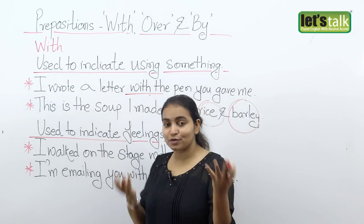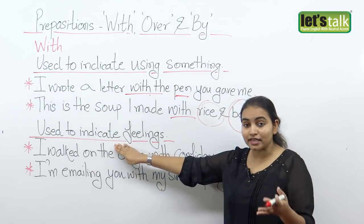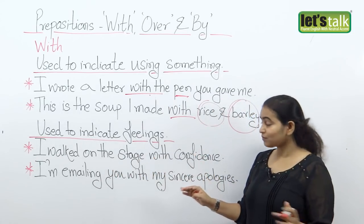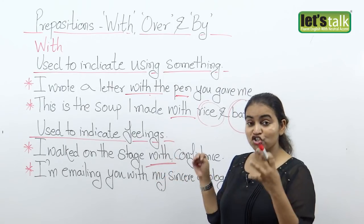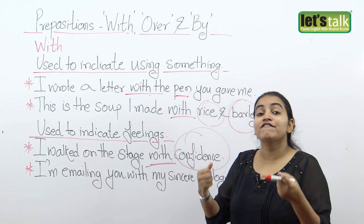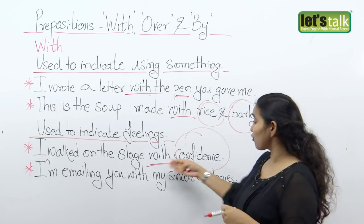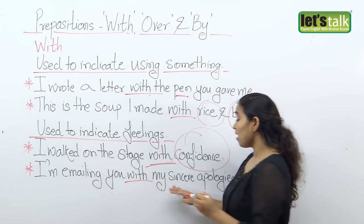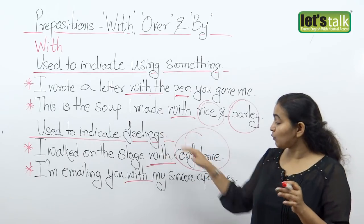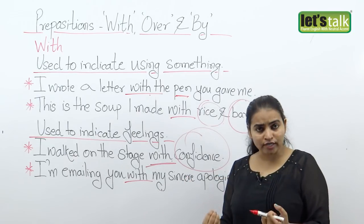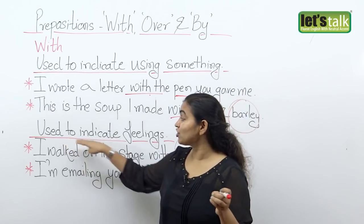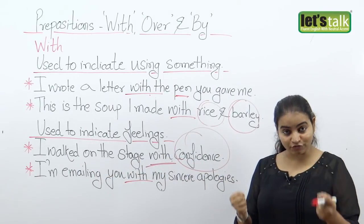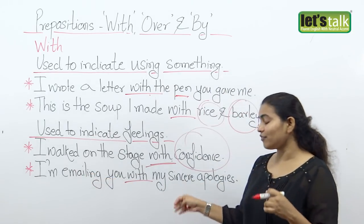The preposition 'with' is also used to indicate feelings and emotions. For example: 'I walked on the stage with confidence' — 'with' is used here to show the person was expressing the feeling of being confident. Similarly, 'I'm emailing you with my sincere apologies' — the feeling depicted is being sorry. So when we want to show feelings, we use the word 'with.'